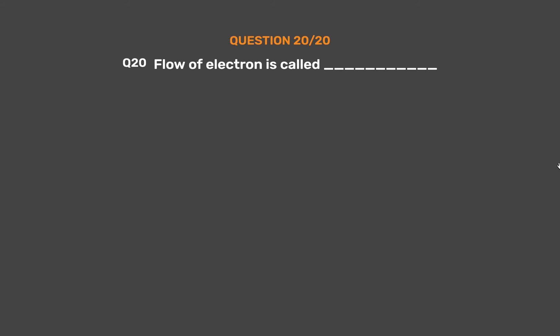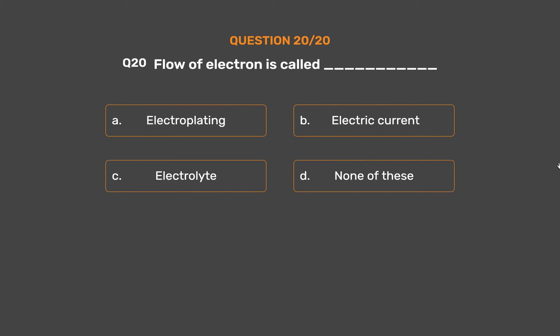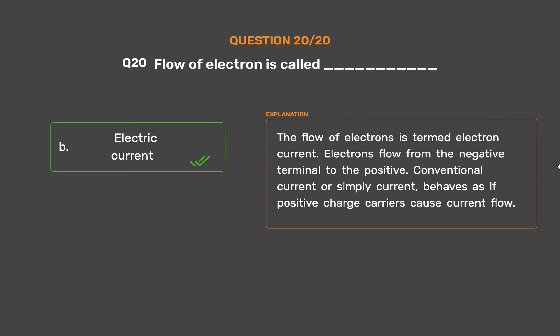Question No. 20: Flow of electrons is called underscore. Option A: Electroplating. Option B: Electric current. Option C: Electrolyte. Option D: None of these. The correct answer is Option B: Electric current. The flow of electrons is termed electron current. Electrons flow from the negative terminal to the positive. Conventional current behaves as if positive charge carriers cause current flow.